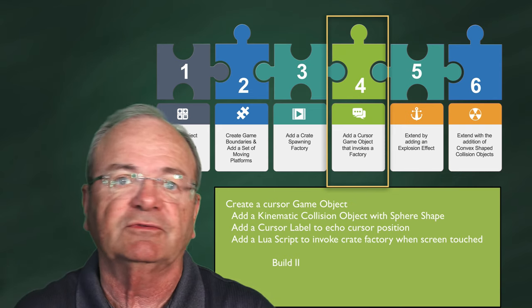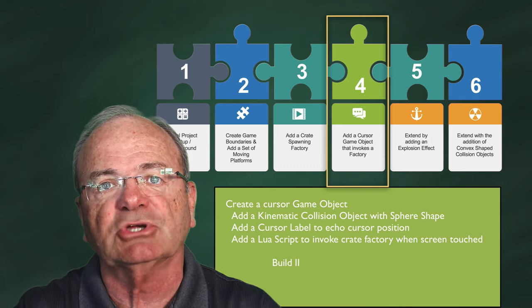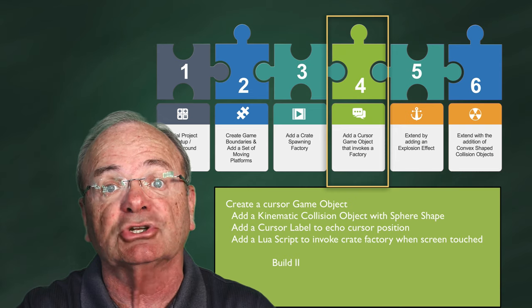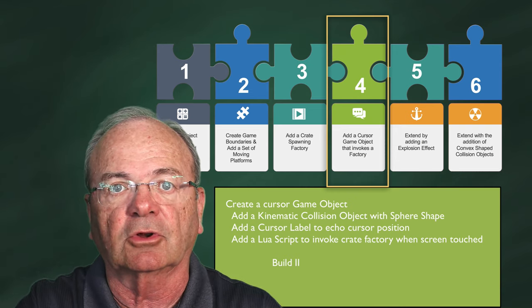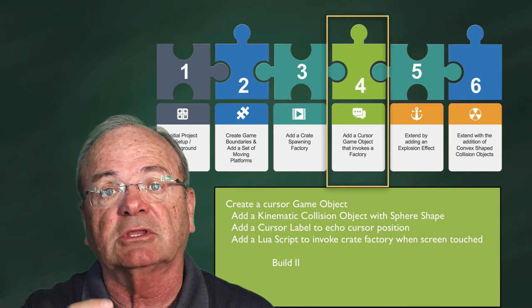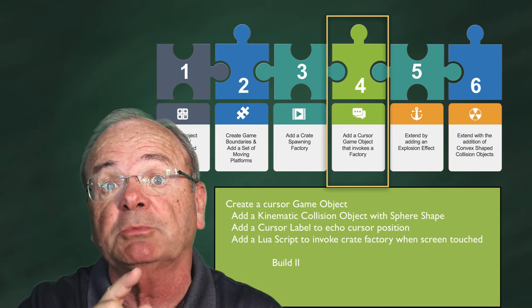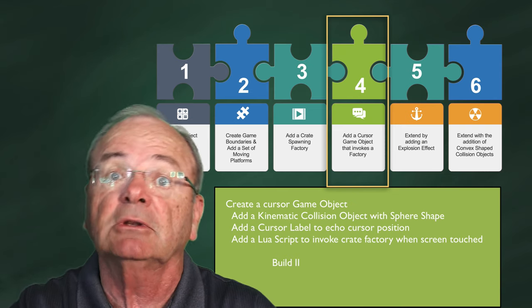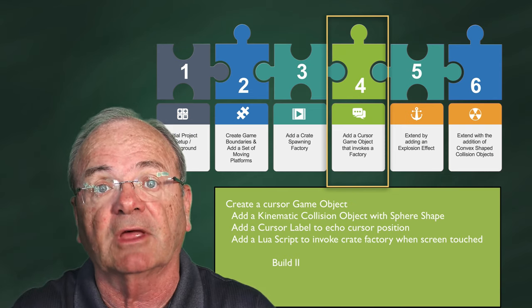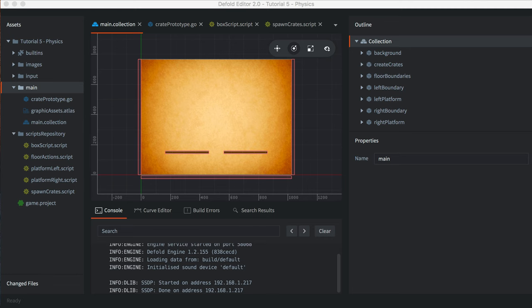In phase four, we're going to add the cursor game object. It's going to be a simple game object — no sprite associated with it, but it will have a kinematic collision object so we'll know where the cursor physically is and what collision objects it's touching. We'll also have a script to capture those actions. After creating the cursor game object we'll do build two, and from that point we should be able to actually spawn a crate, verify the spawning action, and watch gravity effects take control of that crate.